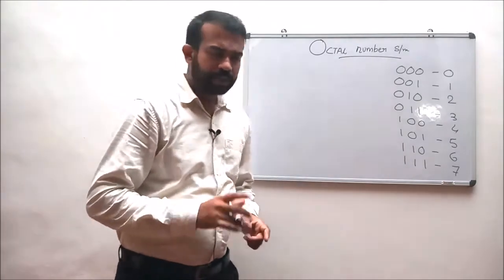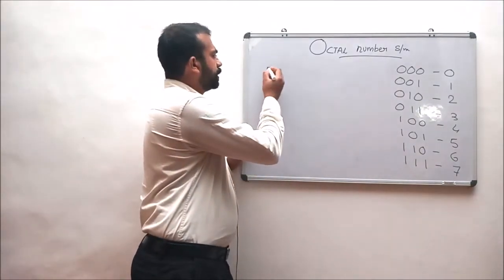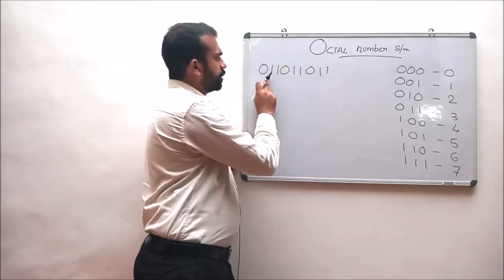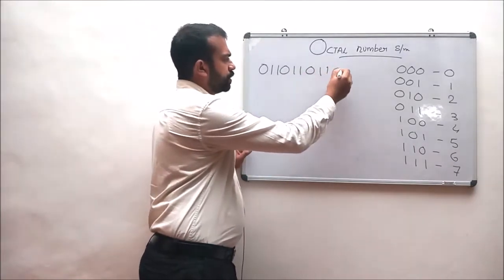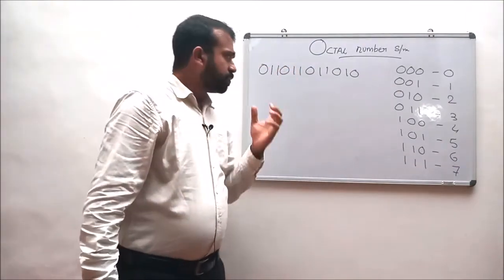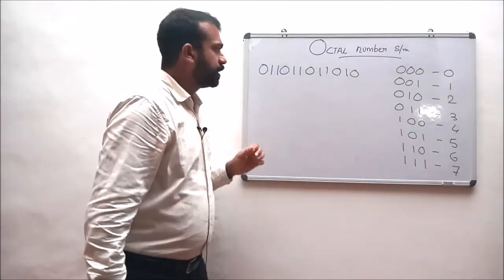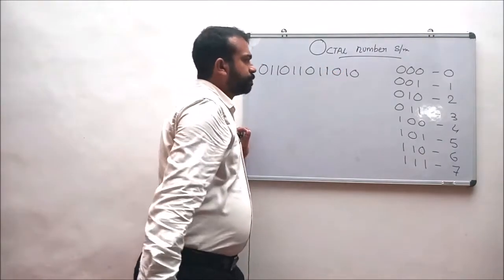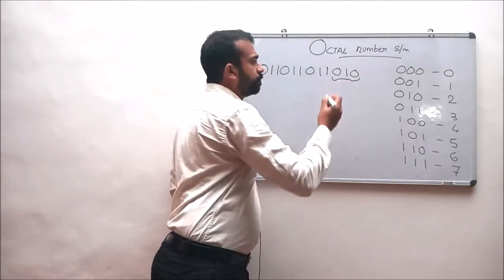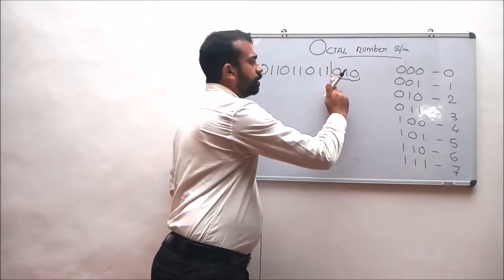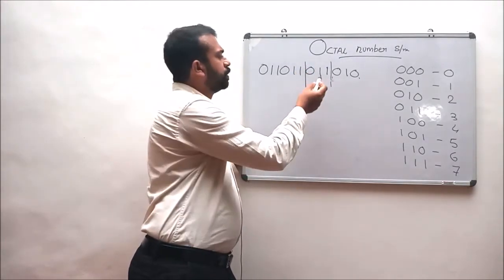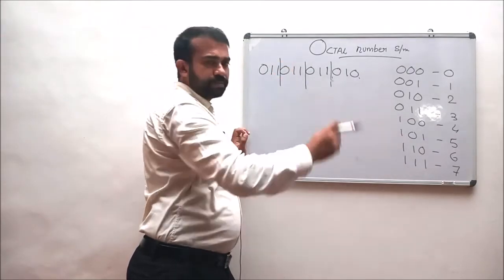Now let us consider an example. Let a binary representation of a sequence of data be 011 011 011 010. We don't know what is coded in this binary representation. For decoding this binary data, let us group these data from the least significant bit into three-digit groupings. We group it as group 1, group 2, and group 3.